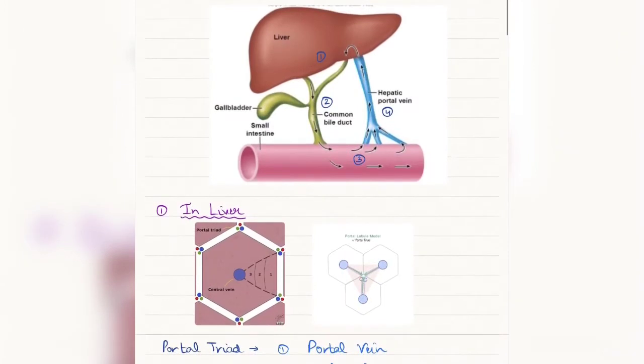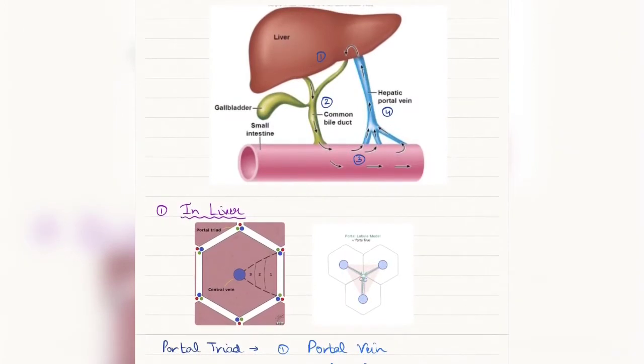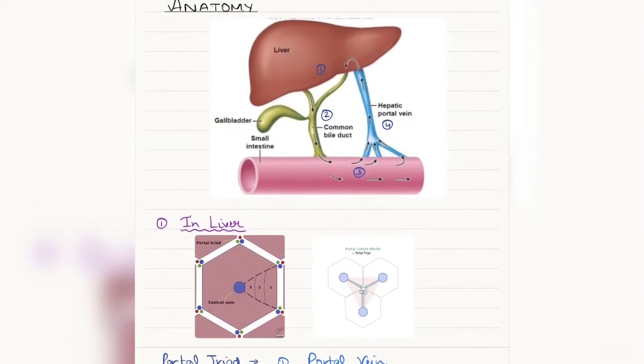Beginning with the anatomy of the enterohepatic circulation, in this given diagram you see the whole circulation of the enterohepatic cycle. For ease of understanding, I have divided it into four limbs: the first one being the liver, second is the biliary tree, third being the intestine, and fourth being the portal circulation.